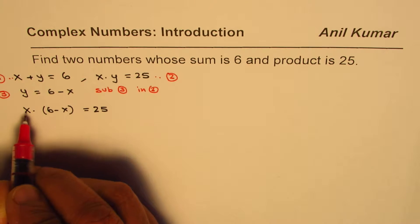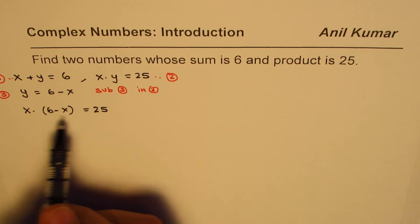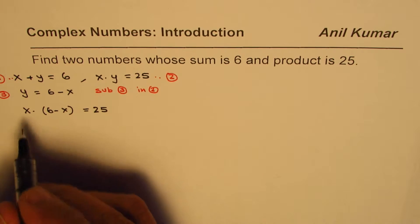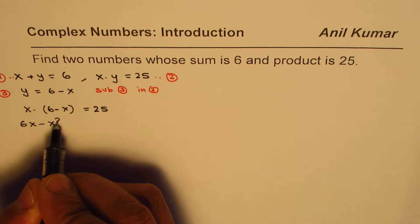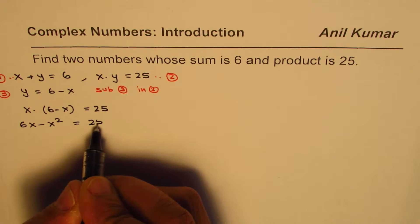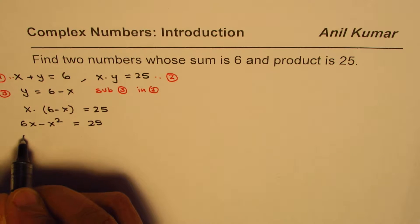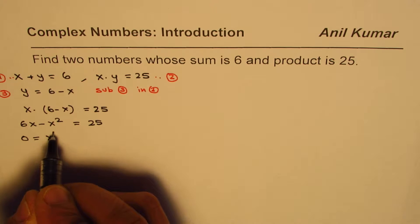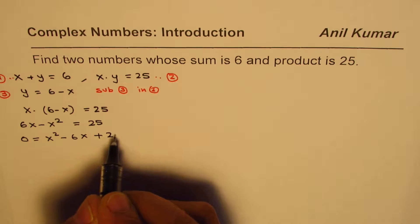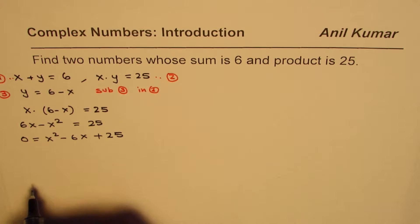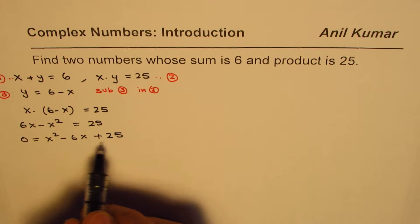We get x times (6 minus x) equals 25 — just one variable. Multiplying out: 6x minus x² equals 25. Taking all terms to the right side gives x² minus 6x plus 25 equals 0.